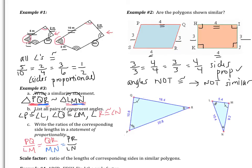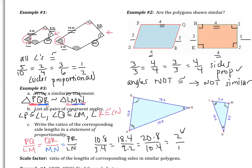Let's check: PQ is 10.8, LM is 5.4; QR is 18.4, MN is 9.2; PR is 20.8, LN is 10.4. If you simplify all of these, they become 2 over 1. This is called the scale factor, which we learned last section — all of the sides change by a factor of 2. Anytime you're asked for the statement of proportionality, it's just listing the corresponding side ratios.